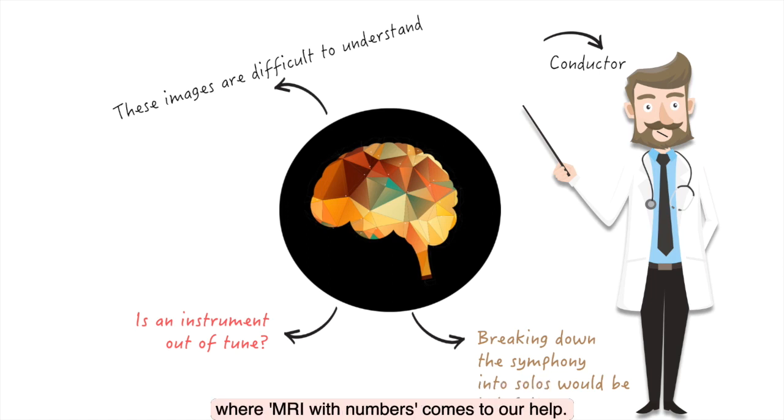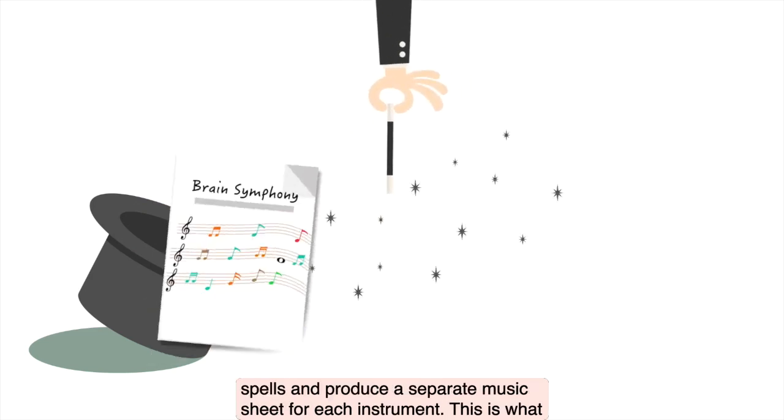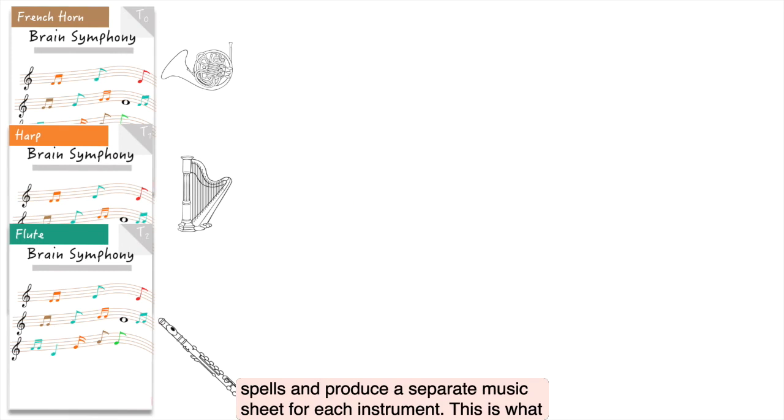And this is where MRI with numbers comes to our help. Think of a magic hat where you can put regular MRI images in, cast some magic spells, and produce a separate music sheet for each instrument.